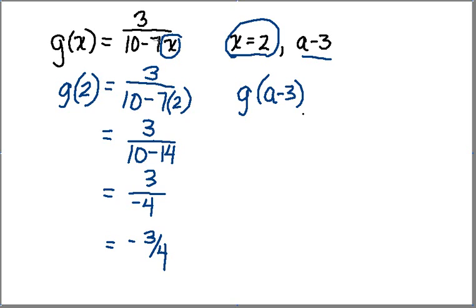Once again, I'm going to go to my function, wherever I have an x, I'm going to plug in a minus 3. So in this case, I get 3 over 10 minus 7 times a minus 3. Okay?